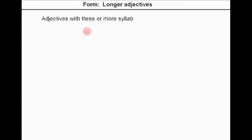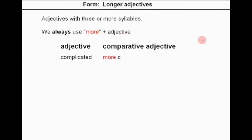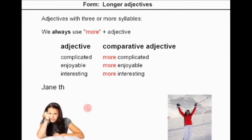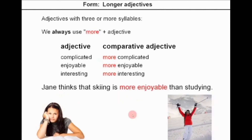For adjectives with three or more syllables, we always use 'more' plus adjective. For example: complicated → more complicated, enjoyable → more enjoyable, interesting → more interesting. Example: Jane thinks that skiing is more enjoyable than studying.